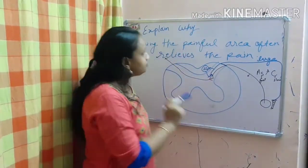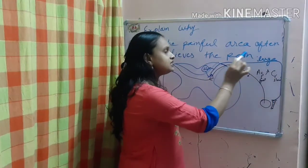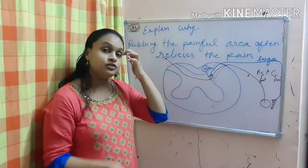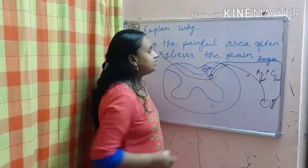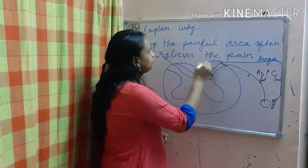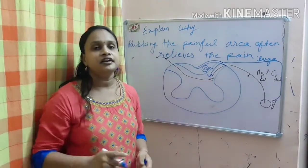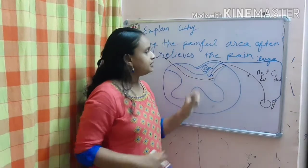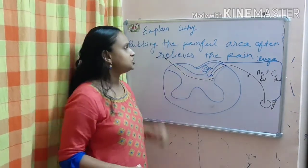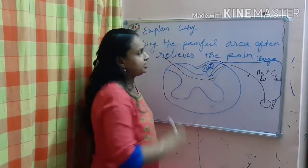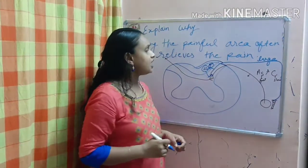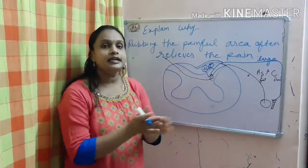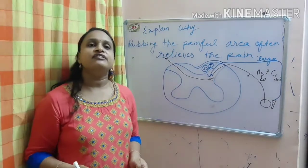But when we touch that part, the large diameter touch fibers going through the dorsal column give one collateral branch to this part. They are going through the dorsal column and going up, but one branch directly inhibits the pain pathway or indirectly via the substantia gelatinosa. It stimulates this substantia gelatinosa, and the substantia gelatinosa just closes this gate. Gate is closed, so pain cannot go, and we will feel less pain.